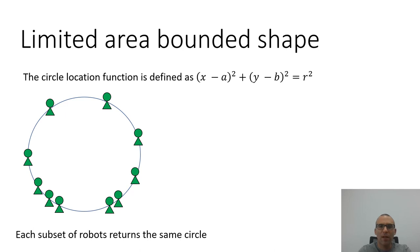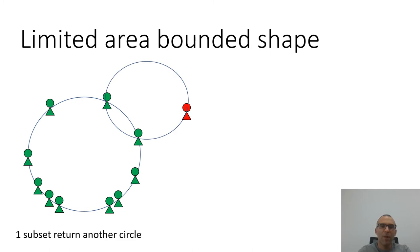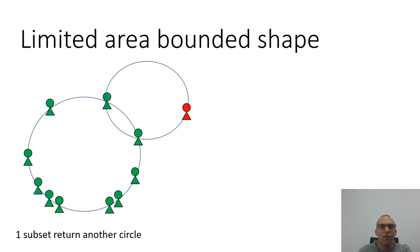In our example, each subset of three robots defines the same circle. But if we have one Byzantine robot, one subset would define another circle. Any three robots on distinct tiles and not on a line can define one circle. Assuming a valid circle for which the location of n minus t robots exists, the common center and radius is found during examination of the three-robot subsets. t is chosen in a way that ensures the existence of at most one possible circle.